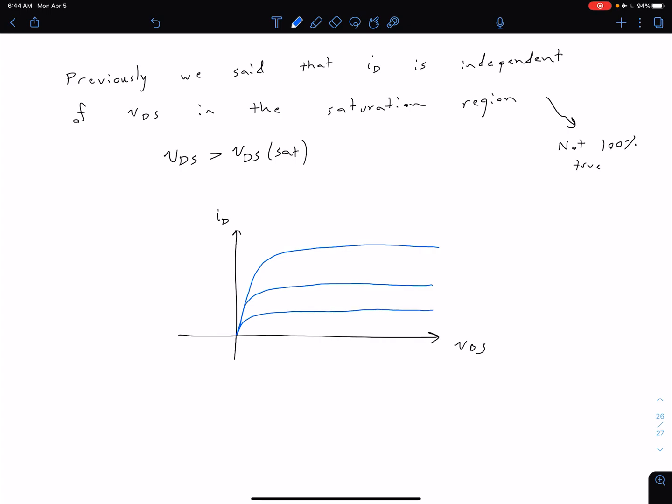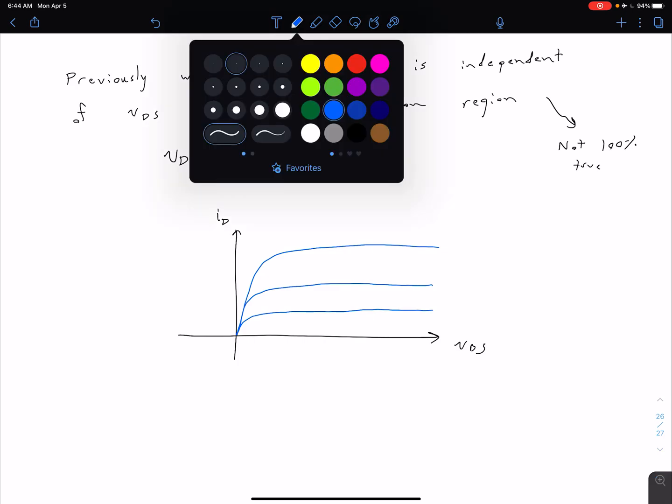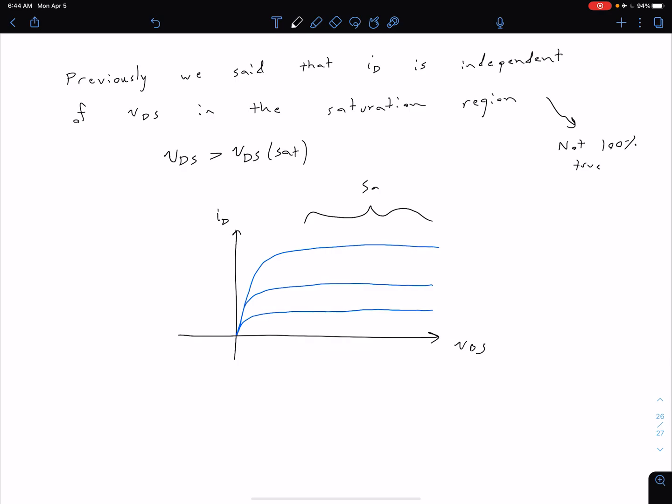In general, this region towards the right we said was our saturation region. So over here we said this is our saturation region. When we drew this before, our curves were horizontal in saturation region, as I've shown here again.